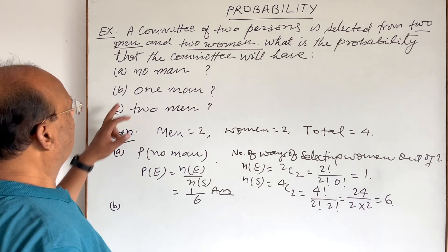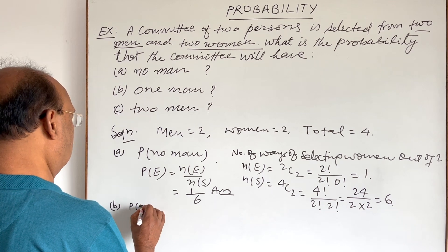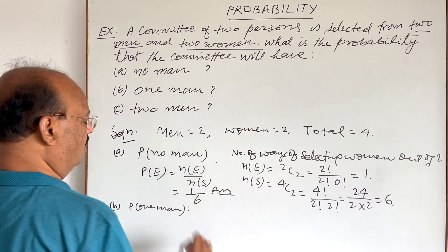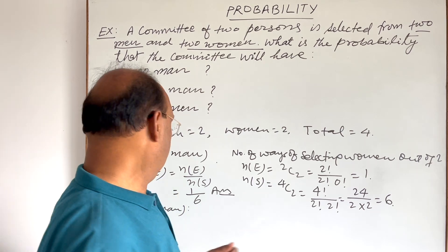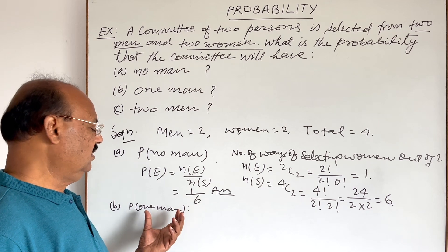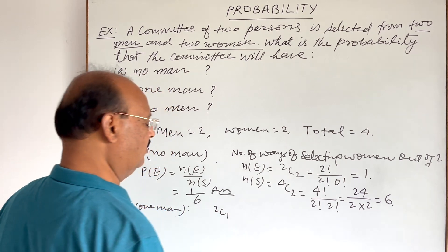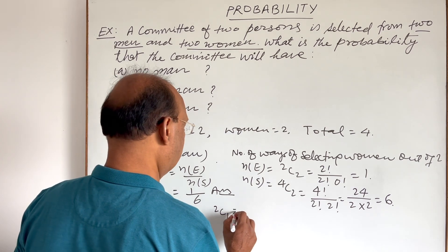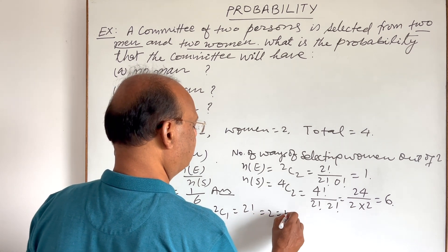Now let us see part B: one man. We have to find the probability that the committee will have 1 man only. In total we have 2 men and 2 women but we have to select only 1 man. How many ways can we select 1 man out of 2? This is 2C1, which equals 2 factorial, giving us 2.